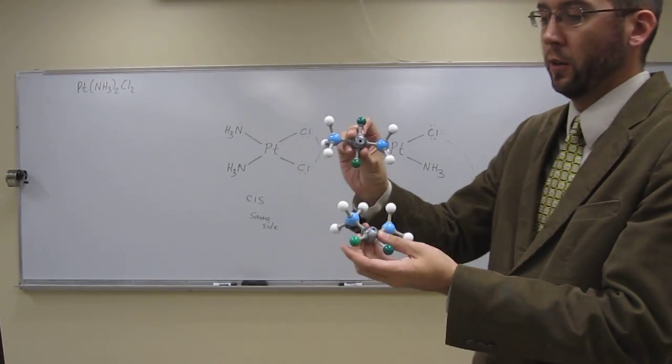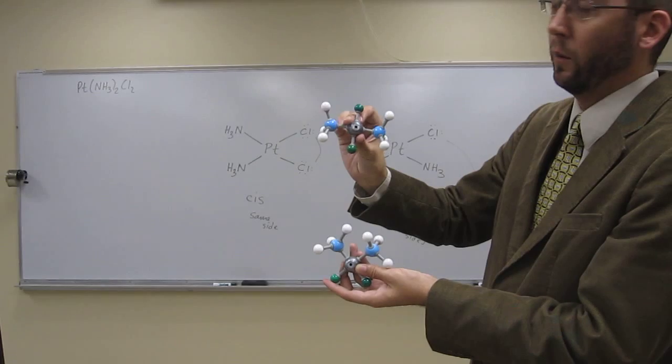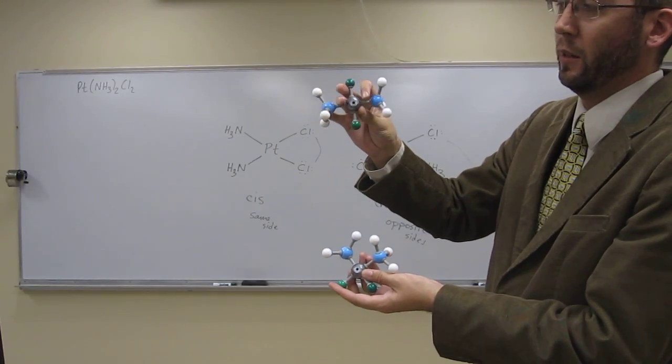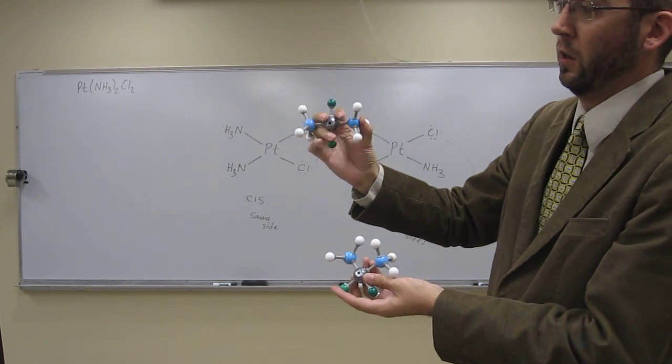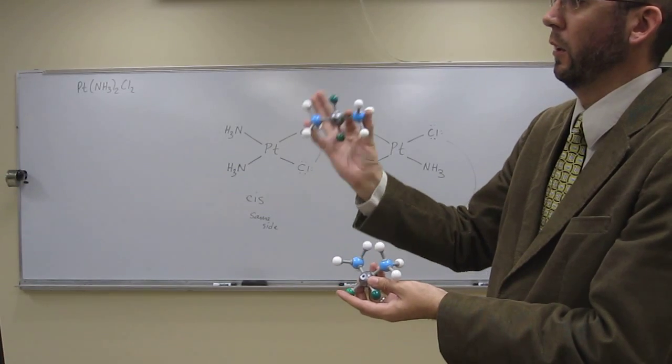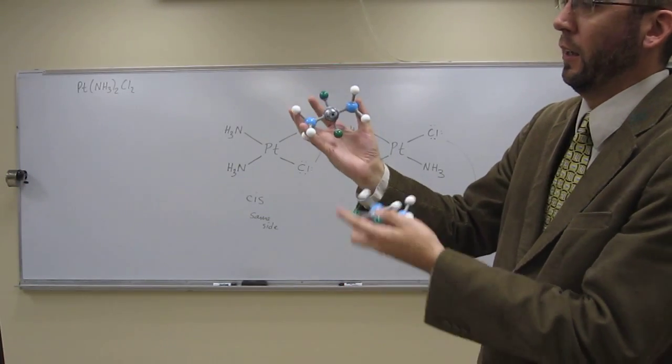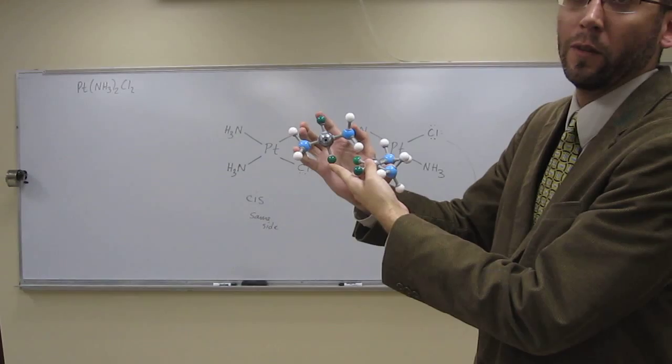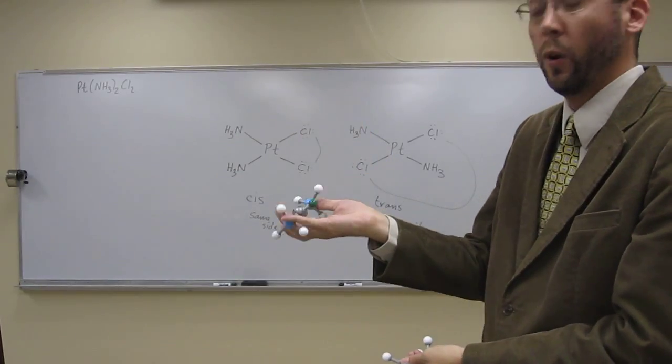And look at the trans. So hopefully you can see it looks quite different. The two ammonia groups on opposite sides of each other. I can hold it, right? Like that. And the two chloro groups on opposite sides of each other. But that's still planar though, still square planar.